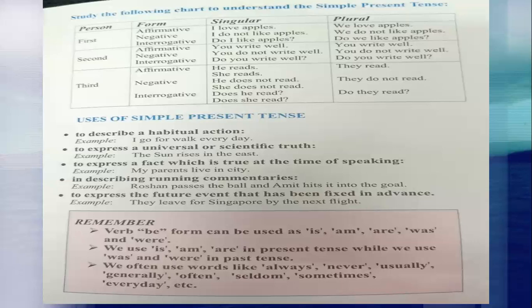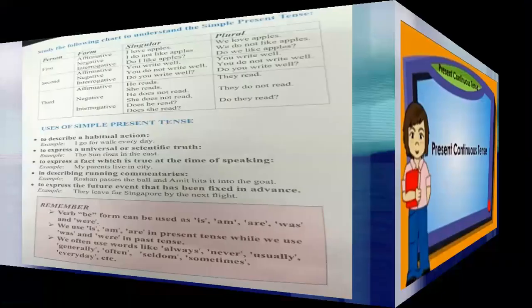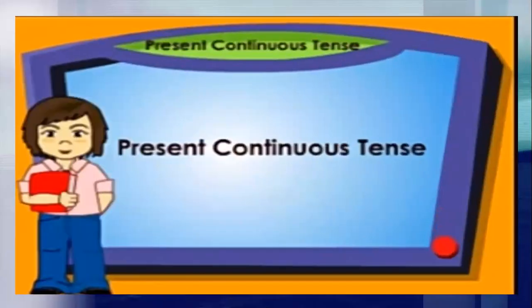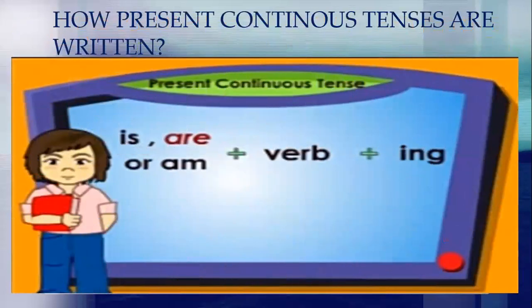Let me clarify the difference between second and third person. If I am talking to you, I am the first person and you are the second person. If we talk about someone else — he or she — that is the third person. Third person means neither I nor you.